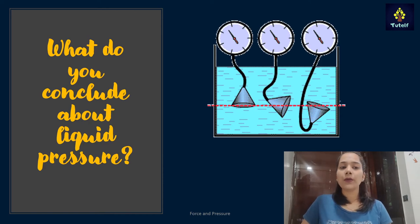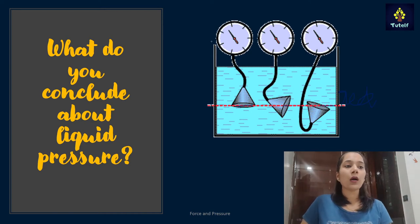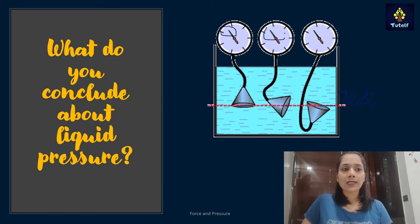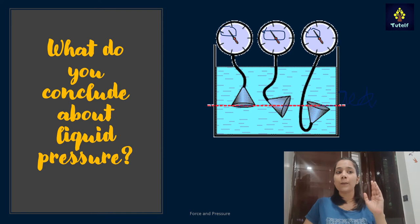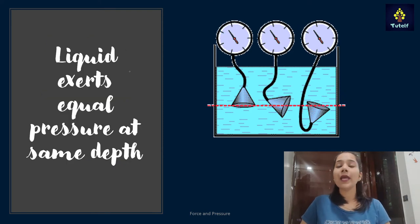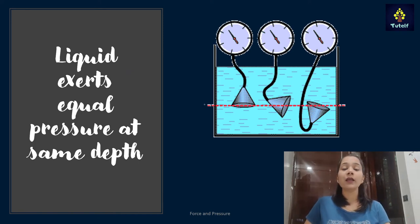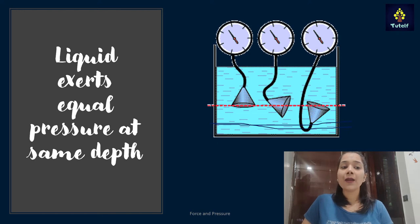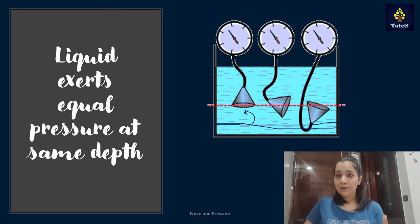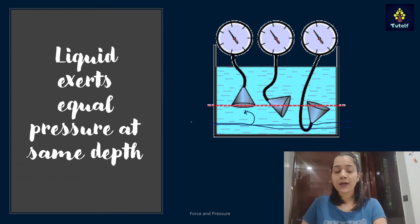A red line has been marked at a certain level, and manometers have been placed at different positions along that same line. The reading on each manometer is the same — the pointer is pointing in the same direction, so the magnitude is the same. Hence, liquid exerts equal pressure at the same depth. If a manometer were placed at a greater depth, the reading would be higher since pressure increases with depth.